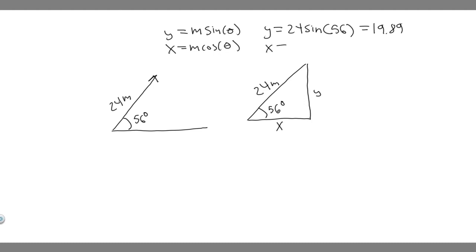And then if we do the x, it's going to be 24 times the cosine of 56. So this is going to be 13.4 — or more precisely 13.42, but I'm just going to round to 13.4 meters.